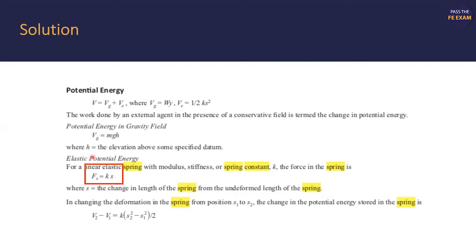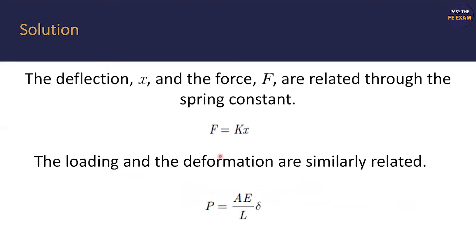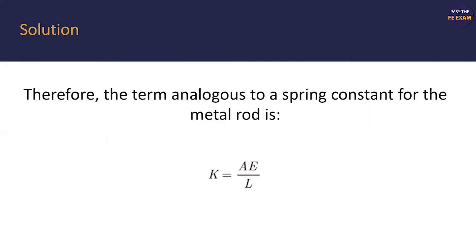So with that, you're going to note this equation down, and then you're going to look at the two equations you have. You have F equals KX — the deflection X and the force F are related through this spring constant K. Similarly, the loading and the deformation are also related. If you look at these two equations, you have the force and the pressure that are related, and you have the deflection X and the deformation delta — they're also related. So what does that leave you with? That leaves you with K for the spring constant in one equation, and in the other equation, it leaves you with AE over L.